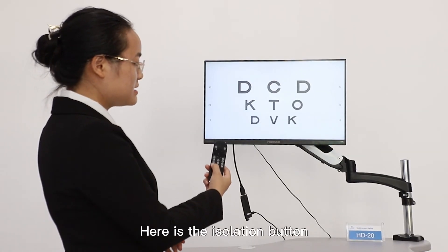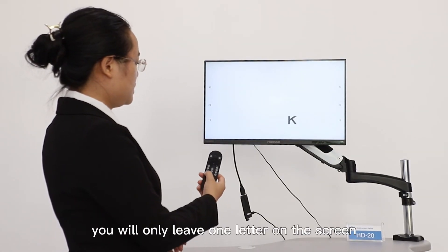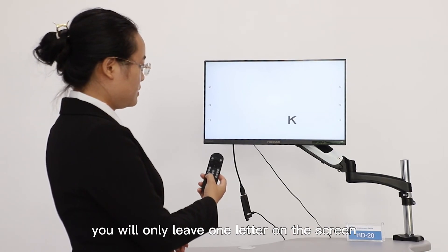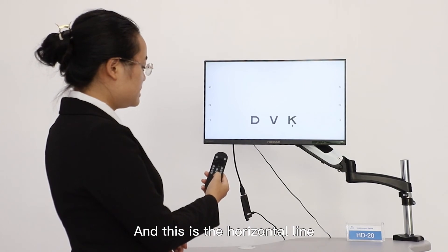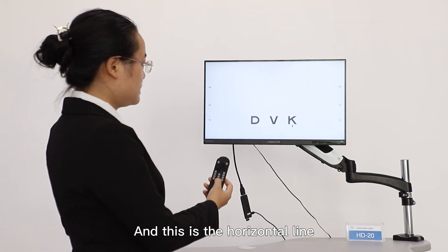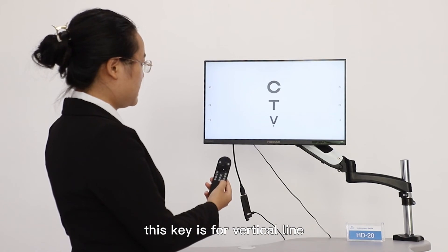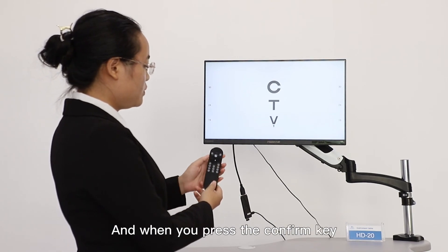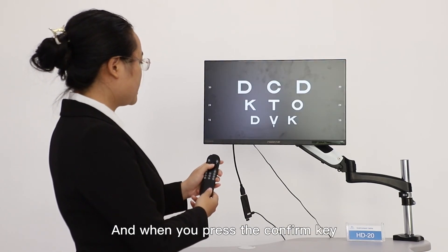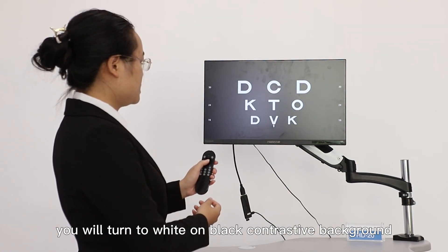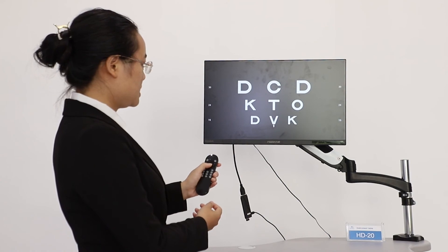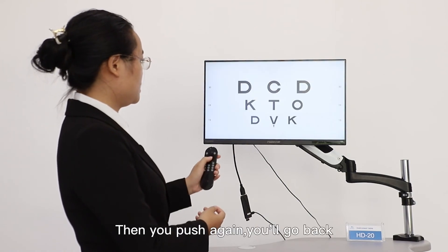Here is the isolation button. You will only have one letter left on the screen. And this is the horizontal line. This key is for vertical line. And when you press the confirm key, you will turn to white on black contrast background. And you push again, you will go back.